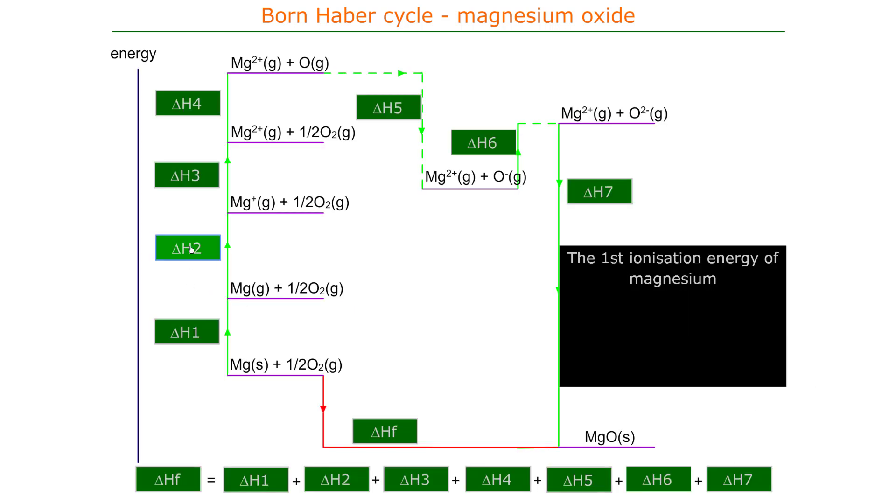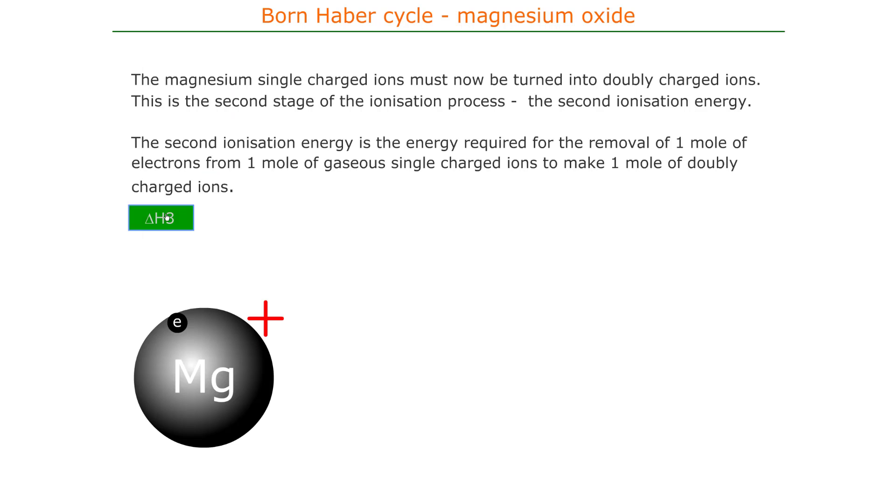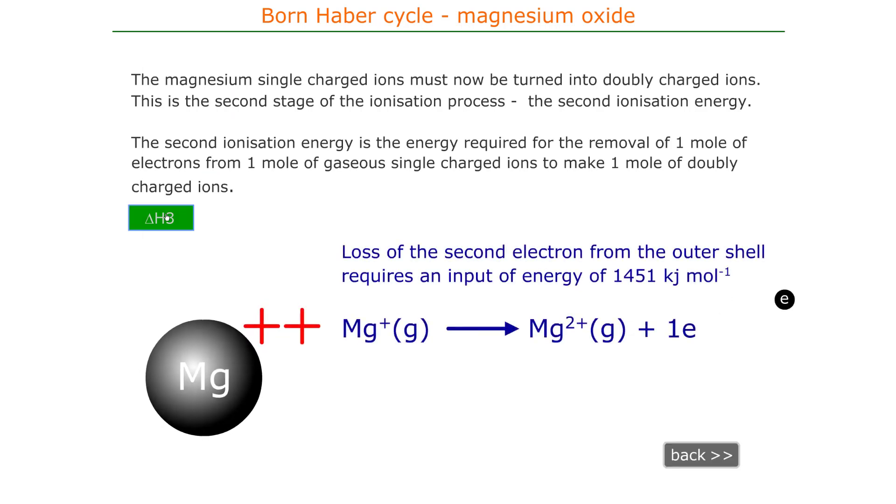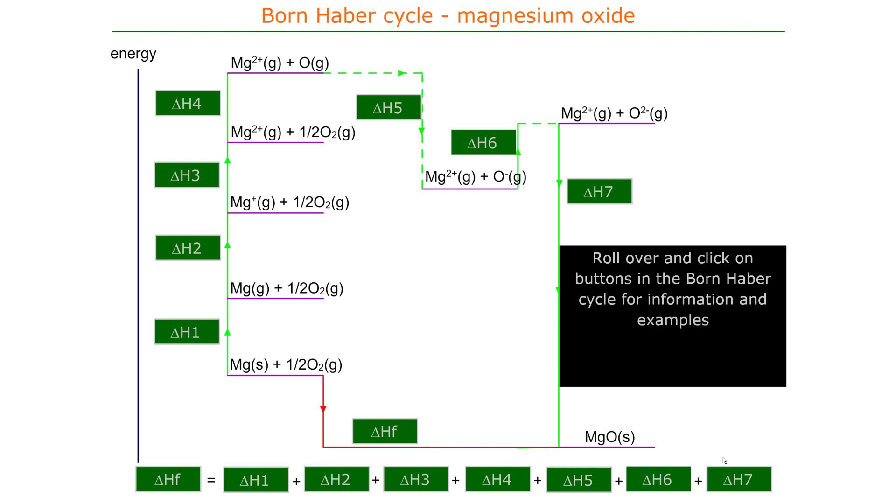The second ionization energy here is magnesium plus to magnesium 2 plus, a different energy requirement. In this case the second ionization requires 1451 kilojoules per mole. At this stage we've got magnesium 2 plus plus half O2 gas.